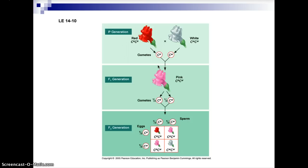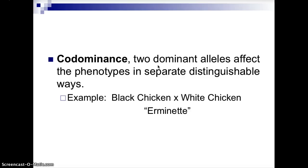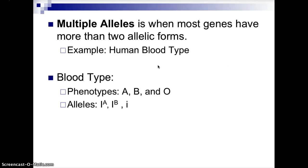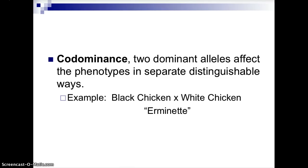Codominance is when two dominant alleles affect the phenotype in separate, distinguishable ways. An example: if you cross a black chicken with a white chicken, you end up with a speckled feathered coloration phenotypically — that special scenario is called erminette. In cows, crossing a red cow with a white cow produces roan cows. In the cross, a black chicken B-B crossed with a white chicken b-b gives all B-b offspring in F1, which have black and white feathers — erminette — due to their heterozygous genotype.